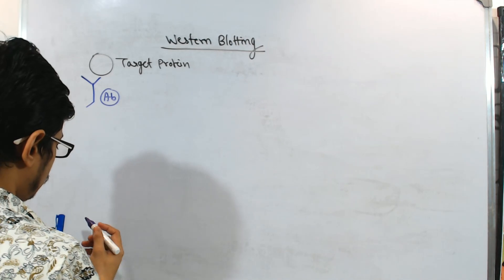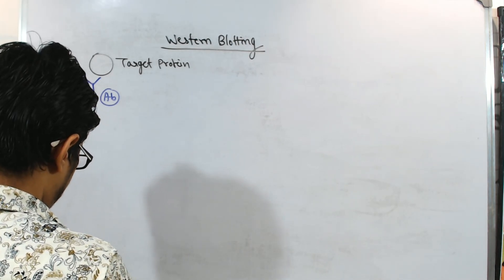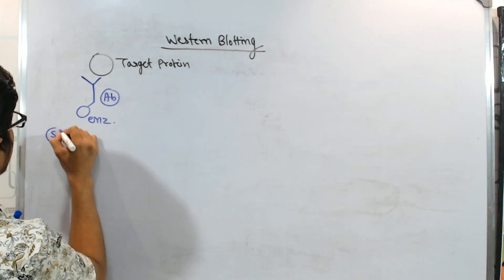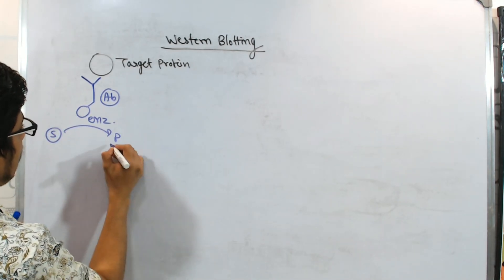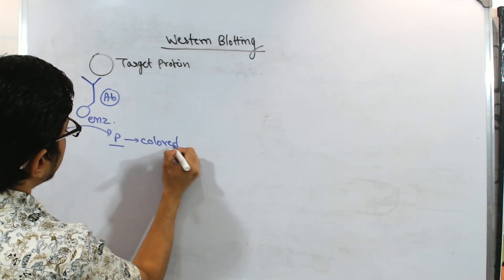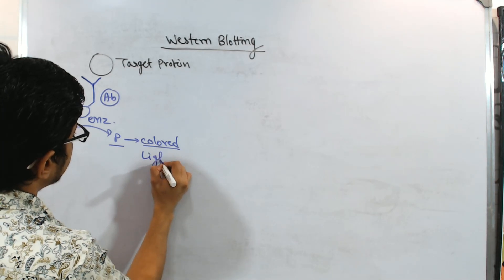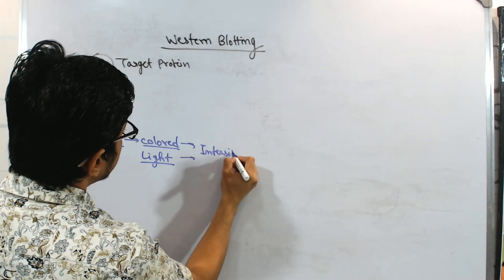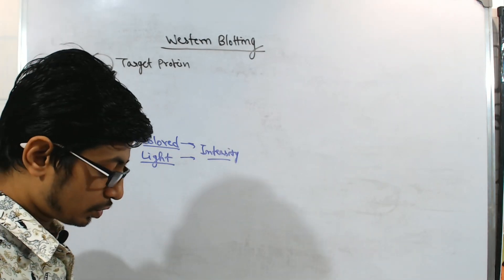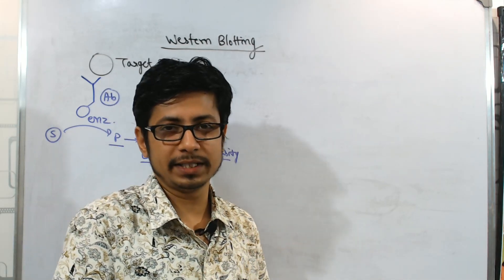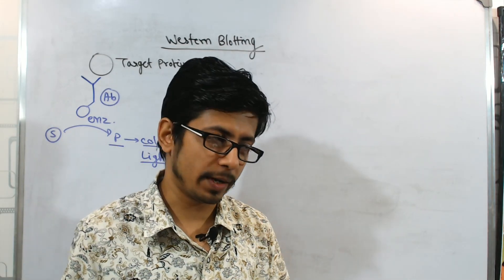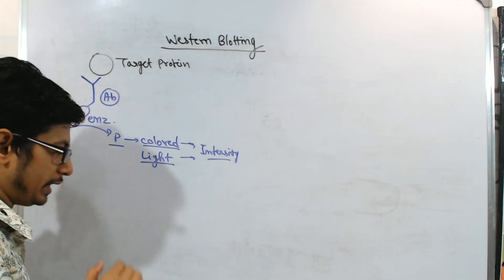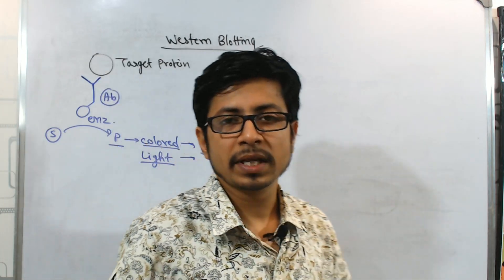The antibody is tagged with an enzyme that can convert a substrate into a product. The product should be a colored product, or the product can be light. Both color and light intensity can be visualized and calculated. So not only will this technique be qualitative, but it can be quantitative as well. That is the key principle — finding the target protein utilizing an antibody.